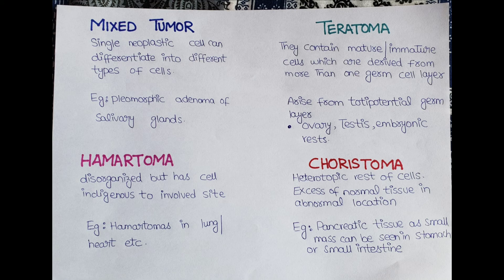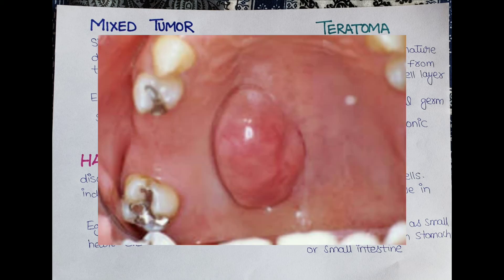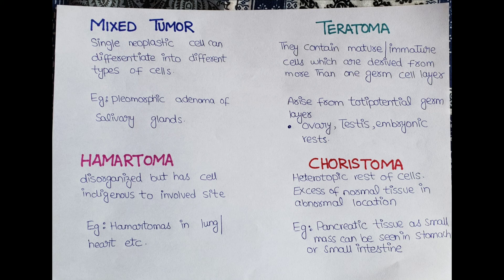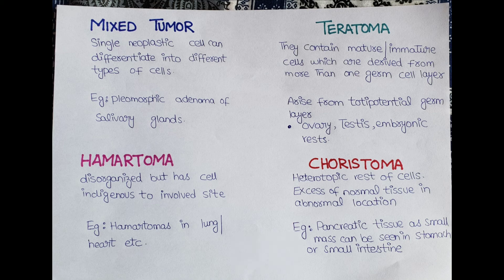Now we will see some important terminologies. First, mixed tumors — these are tumors where a single neoplastic cell can differentiate into different types of cells. For example, pleomorphic adenoma of salivary glands has both an epithelial component and a myxoid or mixed stroma. Importantly, both the epithelial and myxoid stroma are derived from a single clone capable of producing both cell types.